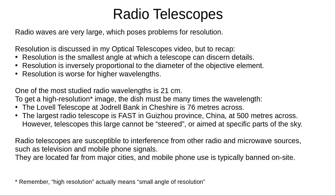Radio waves are very large — they have the largest wavelength of the electromagnetic spectrum. Resolution is the smallest angle at which a telescope can discern details. Resolution is better if the objective element is larger, and resolution is worse if the wavelength studied is larger. One of the most important wavelengths in radio astronomy is 21 centimetres, which we'll discuss more in a future video. To get a high-resolution image, the dish must be many times the wavelength in diameter.